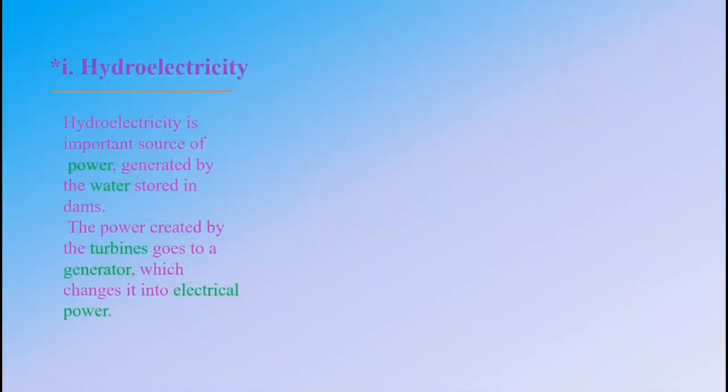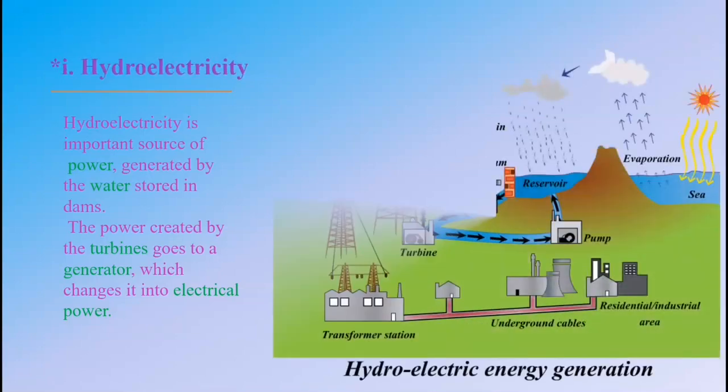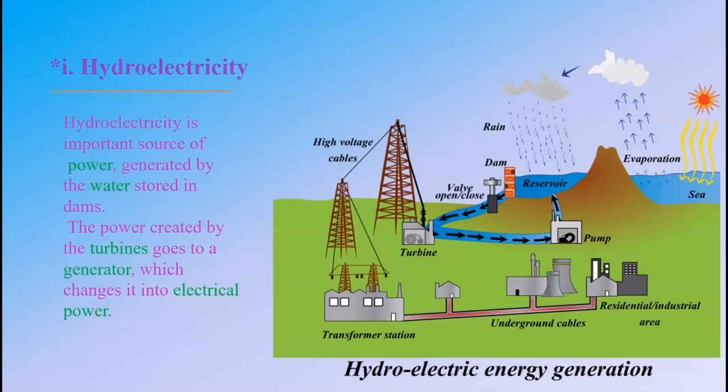The first power is Hydroelectricity. Hydroelectricity is an important source of power generated by the water stored in dams. The dams have special gates which can be opened and closed, and there are turbines near these gates. When a gate is opened, water rushes through and turns the turbines. The power created by the turbines goes to a generator which changes it into electrical power. This power is called Hydroelectricity.